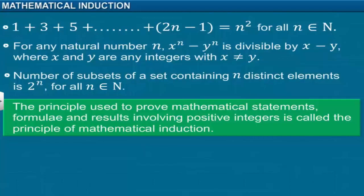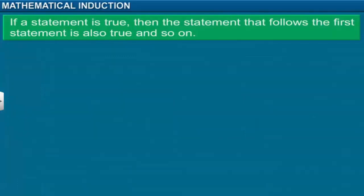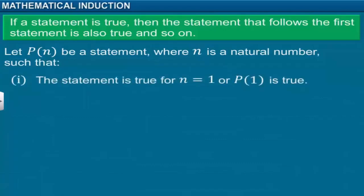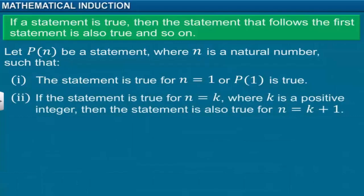To prove mathematical statements through the induction method, we must follow certain principles. The basic principle behind mathematical induction is that if a statement is true, then the statement that follows is also true, and so on. Consider a mathematical statement P(n) involving natural number n, such that the statement is true for n equal to 1 — in other words, P(1) is true. If the statement is true for n equal to k, where k is a positive integer, then the statement is true for n equal to k plus 1. In other words, if P(k) is true, then P(k+1) is also true.